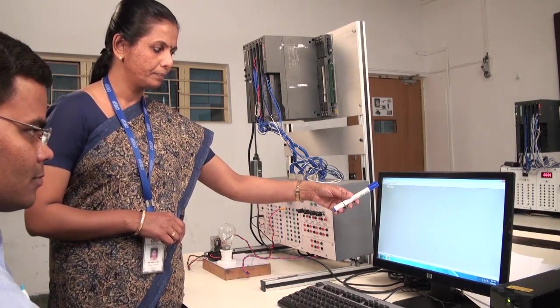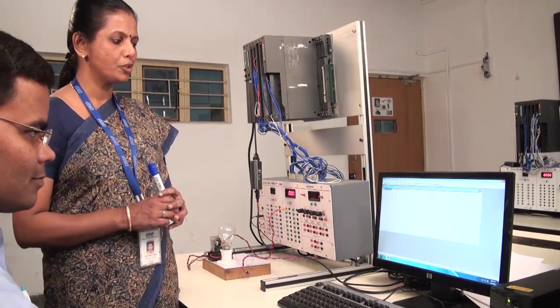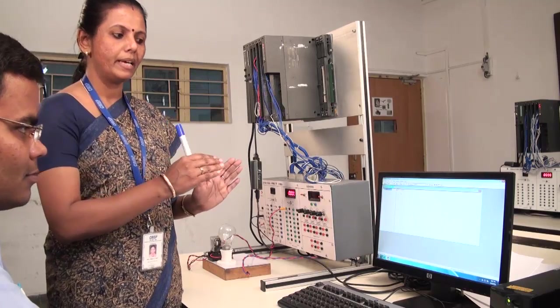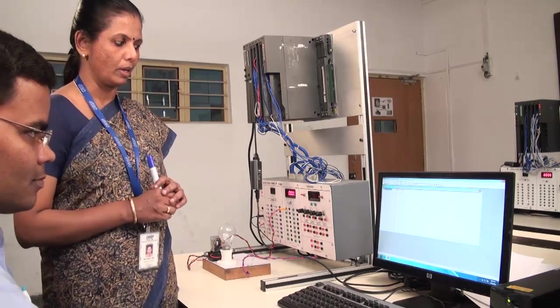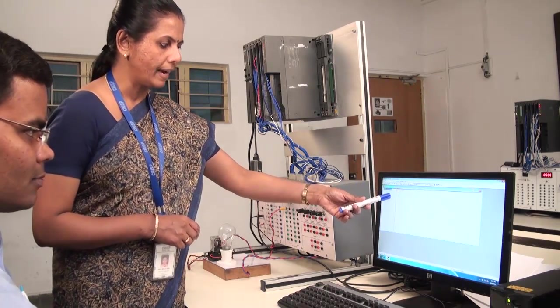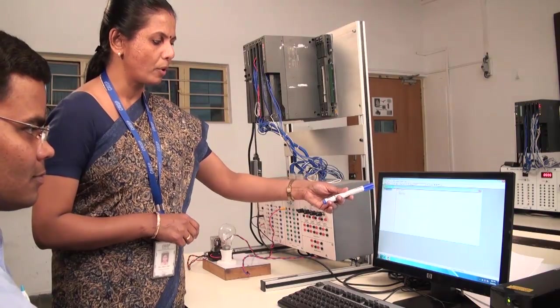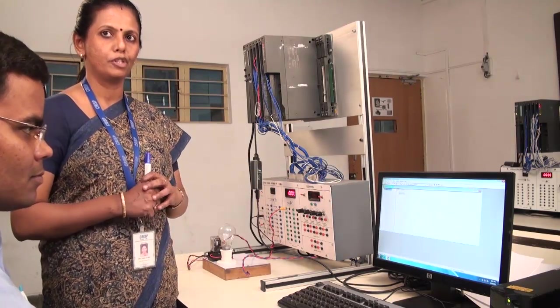Here there is an option available to check the accessible nodes. Just click here and the system will show whether the communication between PLC and PC is proper or not. Here it is clearly showing that PC and PLC is having proper communication and it is connected through node number 2.